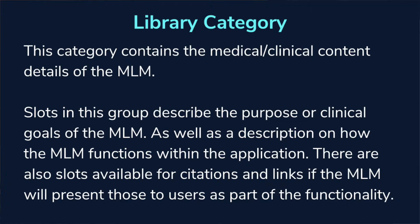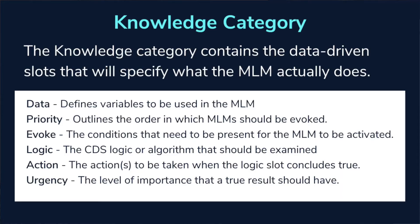There are also slots available in the library category for citations and links, if the MLM is going to present that information to end users as part of its functionality. The third section is the knowledge category — this is the meat and potatoes of the MLM. The knowledge category has the data-driven slots that specify exactly what the MLM is supposed to be doing, and they are all intertwined and have relevance to one another.